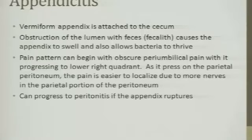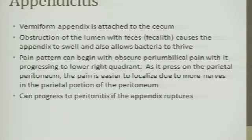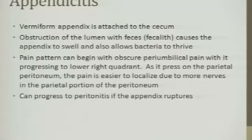With peritonitis, if the appendix ruptures, we're getting bacteria into areas where they shouldn't be. On top of GI bacteria being released, we also start to get anaerobic bacteria. When the appendix is blocked and substances can't flow in and out, anaerobic bacteria build up and can open into the peritoneal cavity — kind of nasty. This can also happen along the GI tract, such as with diverticulitis if it progresses and opens.